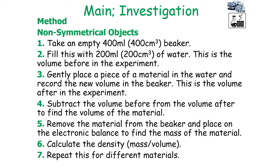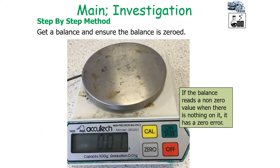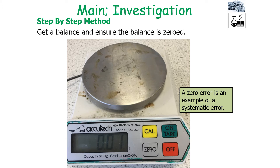You then remove the material from the beaker and place it on an electronic balance to find the mass of the material, and you can then calculate the density using density equals mass over volume. The first thing you would do is get a balance and ensure it is zeroed. If the balance reads a non-zero value when there's nothing on it, it has a zero error, which is an example of a systematic error.